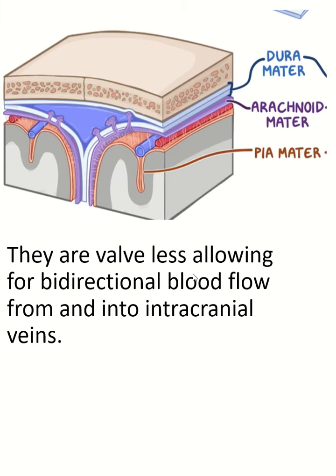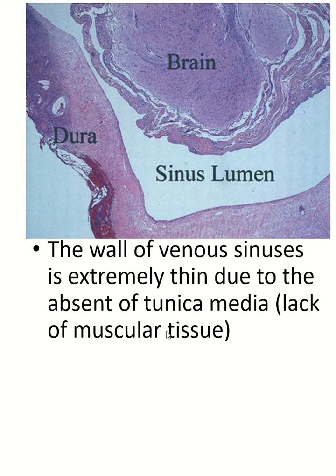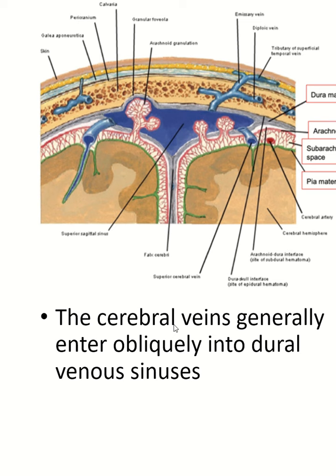The dural venous sinuses are valveless. They are lined by endothelium but have no tunica media or adventitia. Their walls are extremely thin due to the lack of smooth muscle cells in the tunica media. The cerebral veins open obliquely into the dural venous sinus.